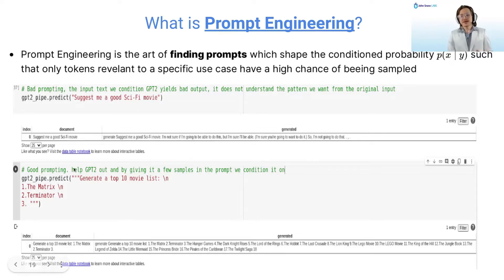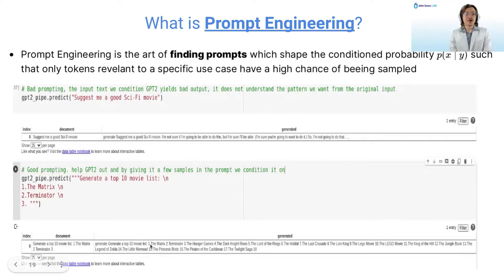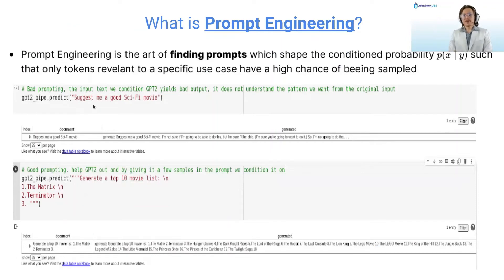On the other hand, you could give the model something like 'generate me a top 10 movie list: The Matrix, The Terminator three...' and then it will start generating more movies. By conditioning the model on these tokens, we reshape the distribution so that only tokens related to movies and numbered lists have a higher probability of occurring, while the other prompt makes garbage tokens appear.